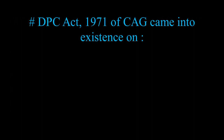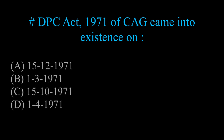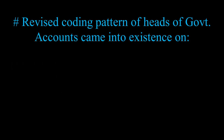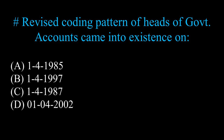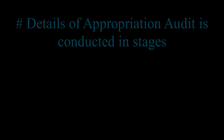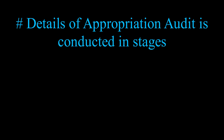DPC Act 1971 of CAG came into existence on? Revised coding pattern of heads of government accounts came into existence on? Details of appropriation audit is conducted in how many stages?